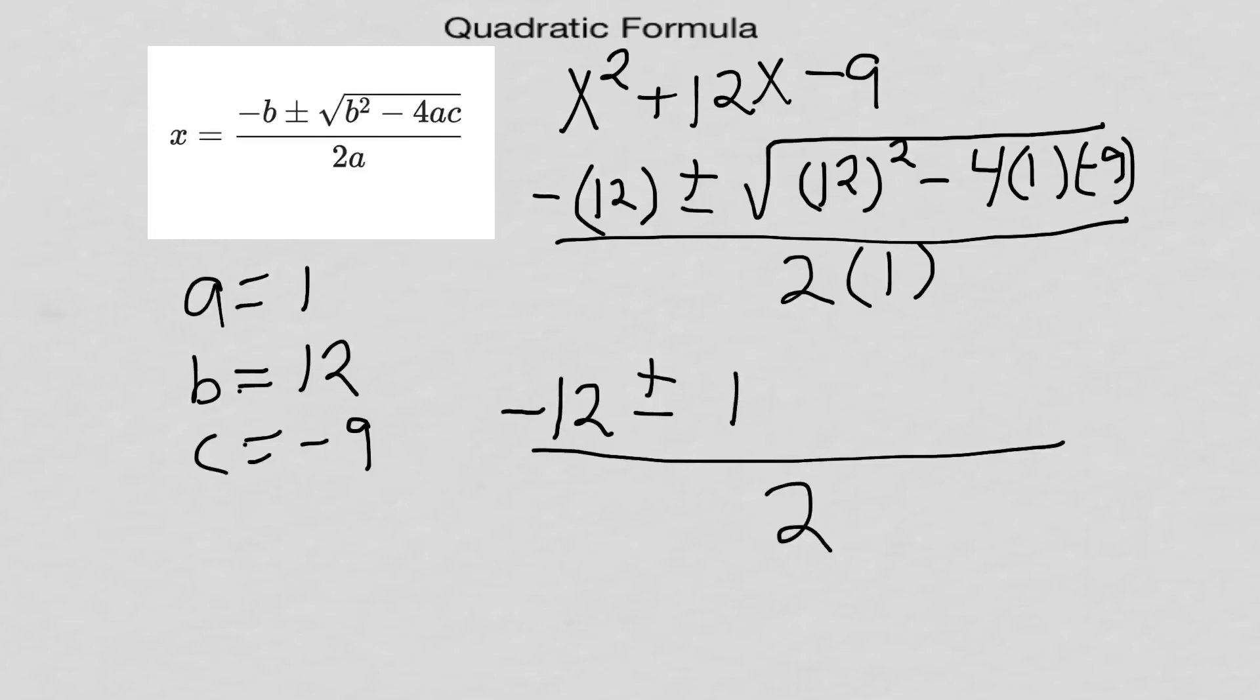I'm ready to do the math on this. Negative 12 plus 13.9 divided by 2 is going to give me 0.95.